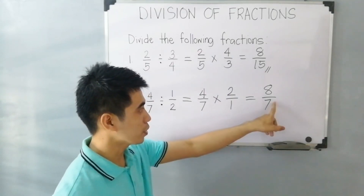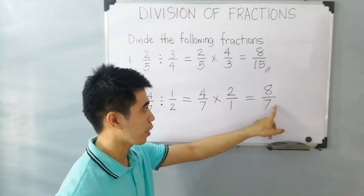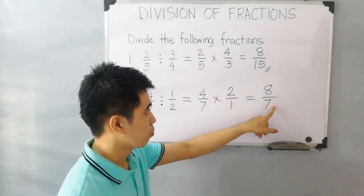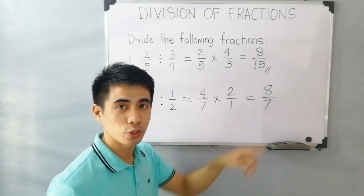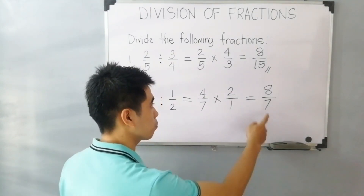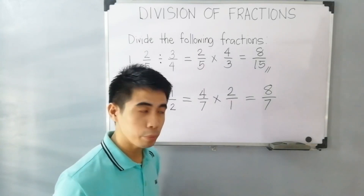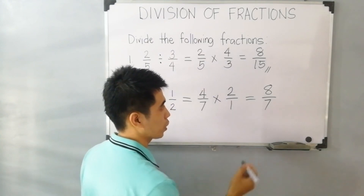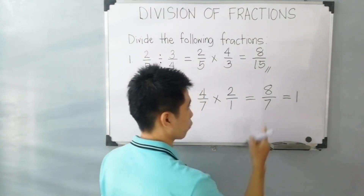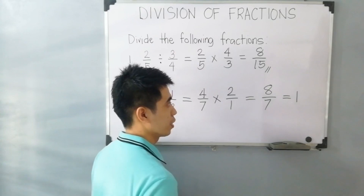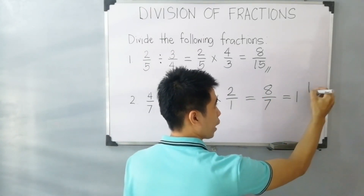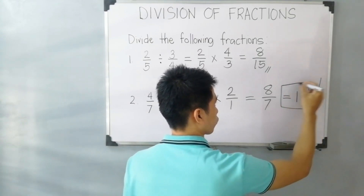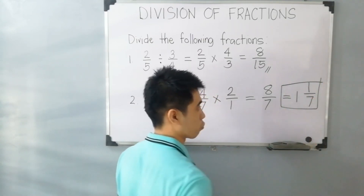As you can see, 8 is higher than 7, so this is an improper fraction. You need to rewrite it as a mixed number. To do that, just divide 8 by 7: we get 1, with a remainder of 1 (since 8 minus 7 is 1). Then copy the denominator of 7. Therefore, our final answer is 1 and 1 over 7.